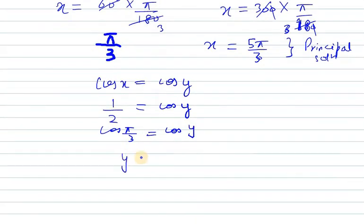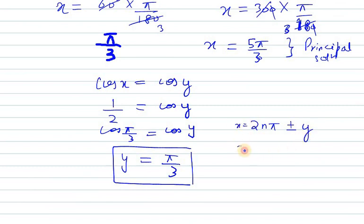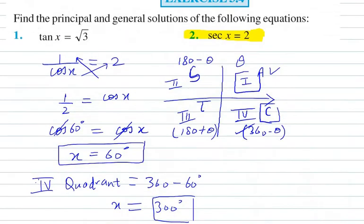So cos pi by 3 equals cos y. Now we can write y as pi over 3. The general solution for cos x is 2n pi plus or minus y. So in this case we can write x equals 2n pi plus or minus pi over 3, and here you can write that n belongs to Z.